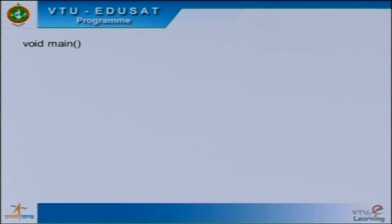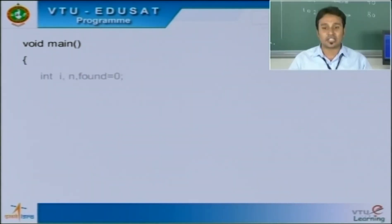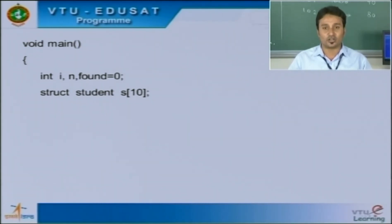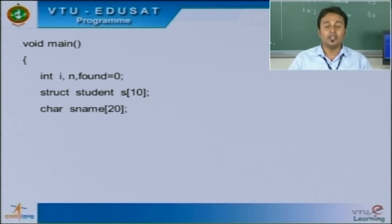Next we have the void main function where execution starts. Inside main, the declaration part has variables i, n, and found initialized to 0, all of integer data type. An important step follows: we instantiate an instance of the structure using struct student s[10], where s[10] indicates an array of structures that can hold up to 10 student values. We also declare a character array sname of size 20, used to search for a student name to fetch their marks.